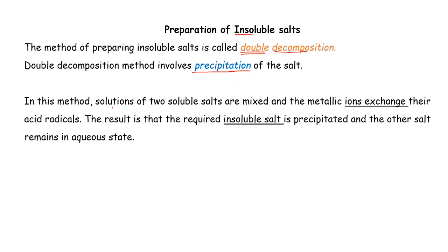In this method, we are going to use solutions of two soluble salts, mix them together, and we will have metallic ion exchange along with acid radical exchange. The result is that the required insoluble salt will be precipitated, while the other salt will remain in aqueous state.